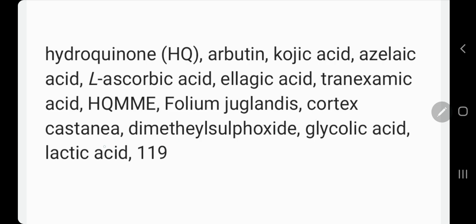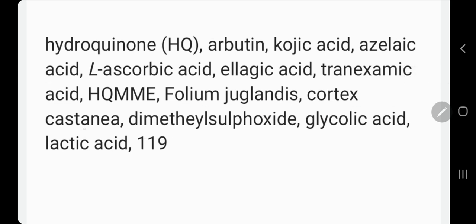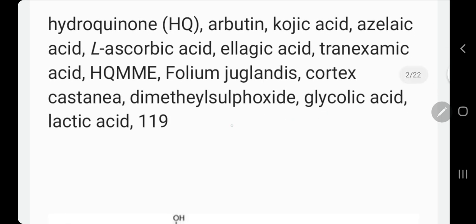Cortex castania is a type of species they use extracts from. Also: dimethyl sulfoxide, glycolic acid, and lactic acid, which are also found in dairy products. And a chemical that has the number 119.